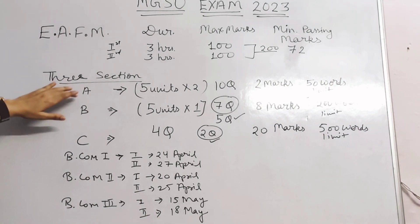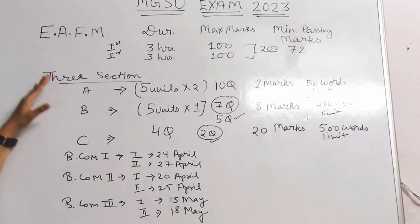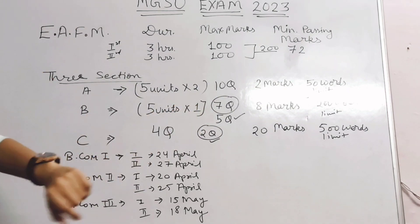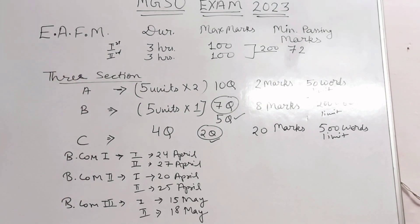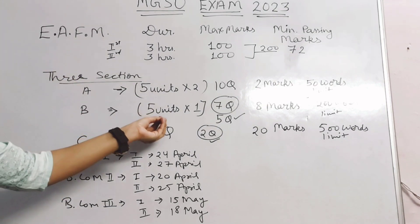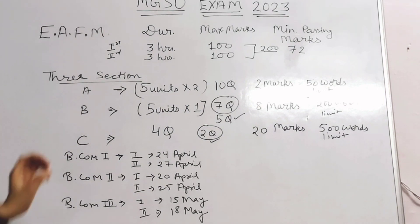When we talk about Section B, there are 7 questions and you have to do 5 questions. There will be one question from each unit, and each answer should be around 200 words. We have to attend Section B carefully.